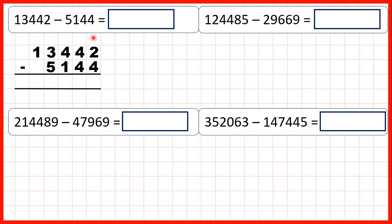With column subtraction we work from right to left. So first we have 2 minus 4, but 4 is larger than 2. So what we need to do here is go to the left, one less, one in front, and then we have 12 minus 4, which is 8.